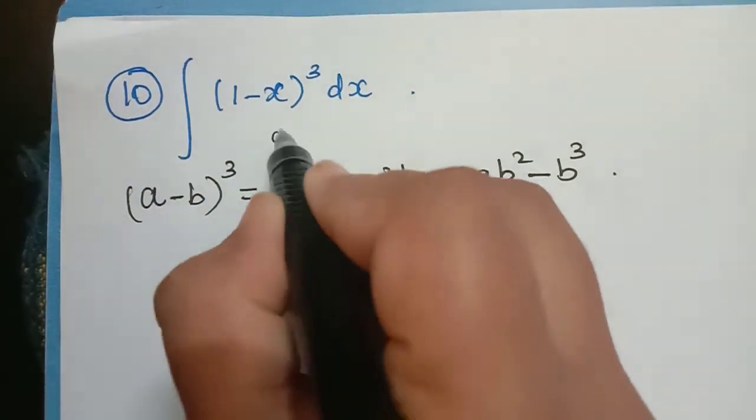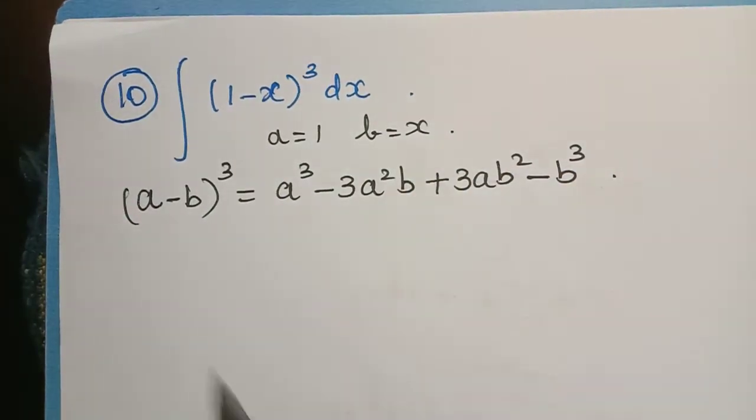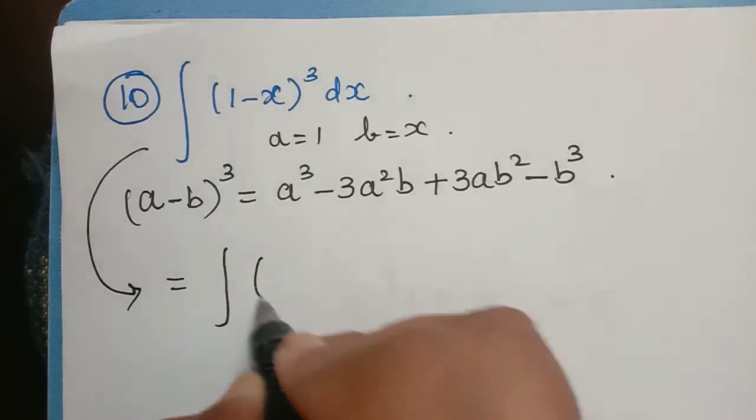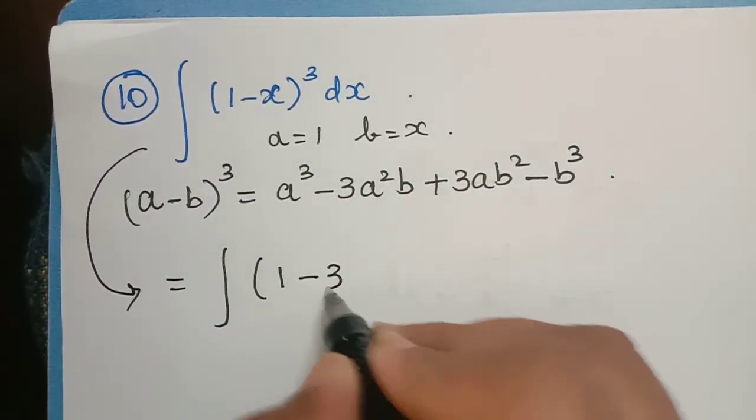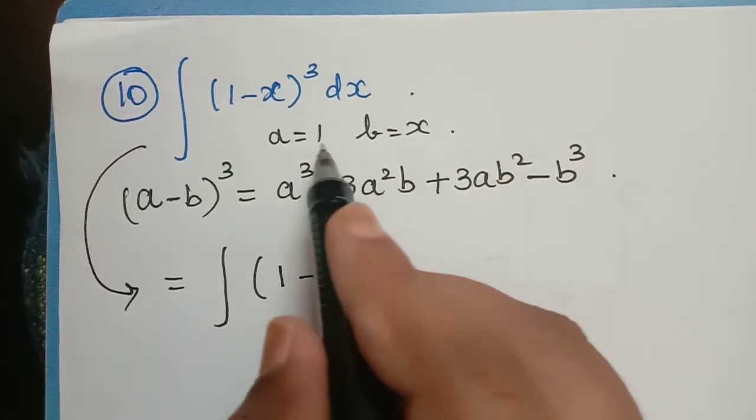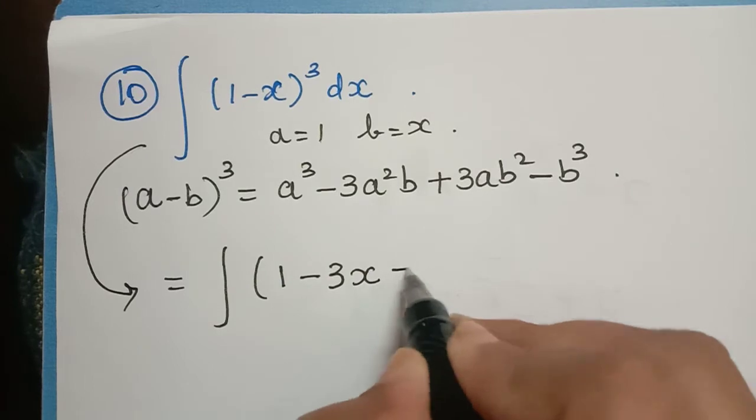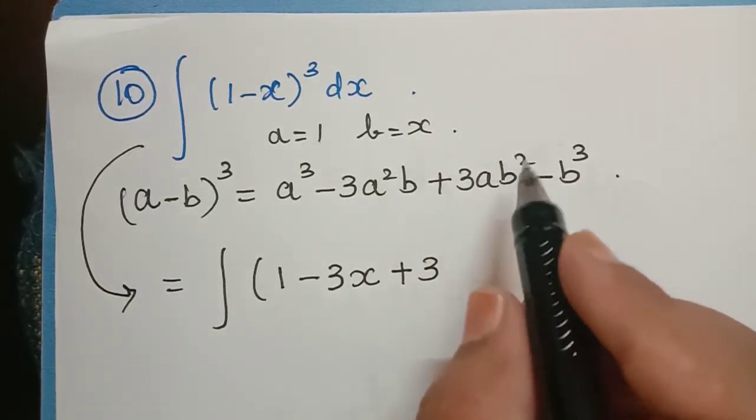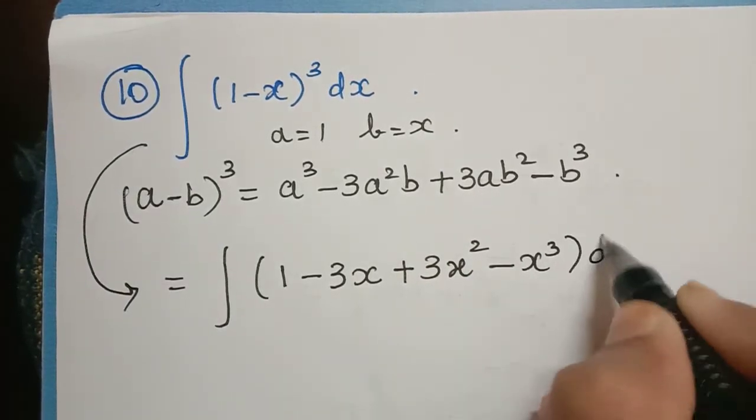Now here the value of a is equal to 1 and the value of b is equal to x. So when we expand this we get it as integral, a³ so 1³ so 1, minus 3a²b, so a² is 1² which is 1, b is x, and then plus 3a, so 3 into 1 into b² which is x² minus x³ dx.